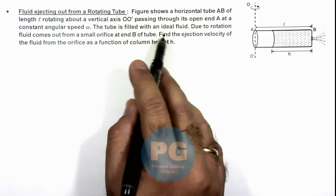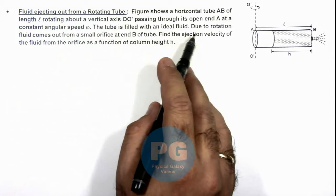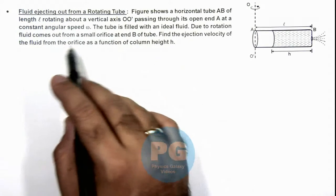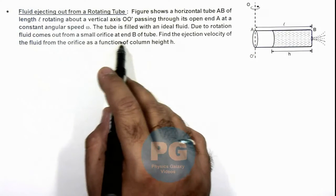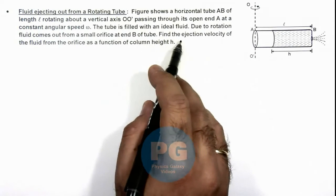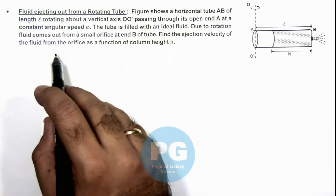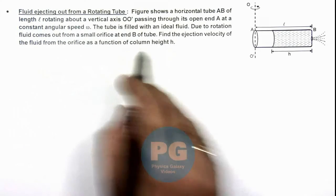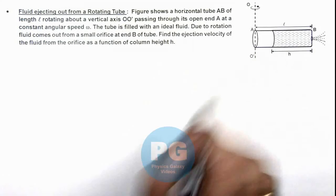The tube is filled with an ideal fluid. Due to rotation, fluid comes out from a small orifice at end B of the tube. We are required to find the ejection velocity of the fluid from the orifice as a function of this column height h which is filled with the liquid.